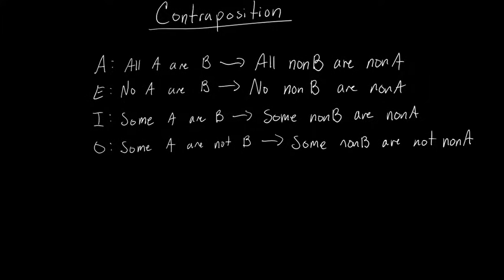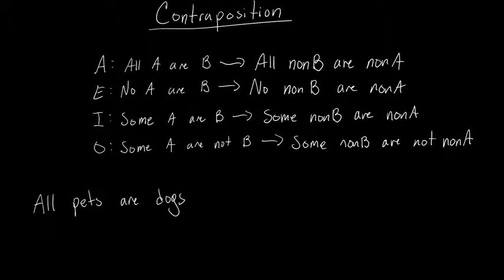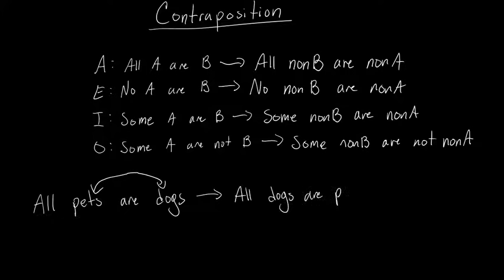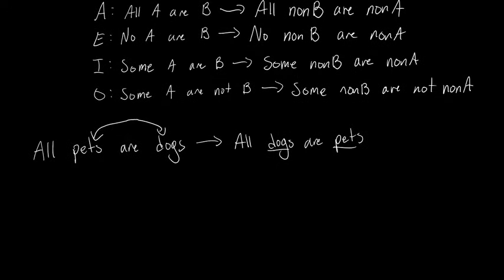And that's it. If we break this down into smaller steps, there are two steps and it's relatively straightforward. For instance, let's use words and take an A-type statement such as 'all pets are dogs' — this is of course false, but it'll work. The first step would be to just swap the subject and predicate so that it becomes 'all dogs are pets'.